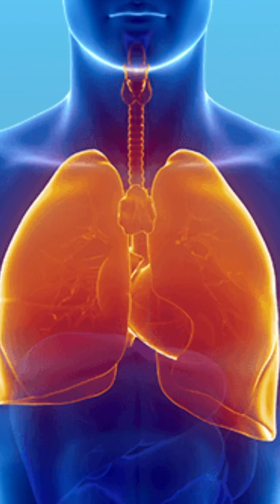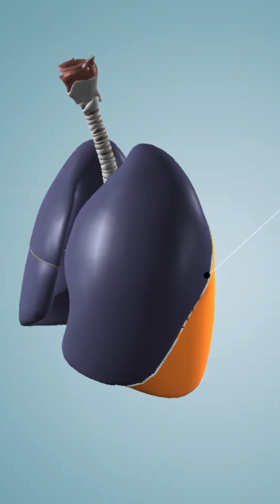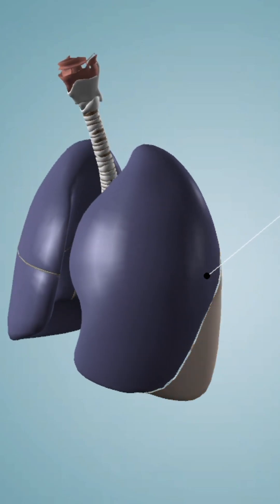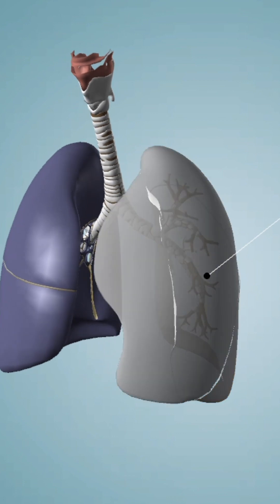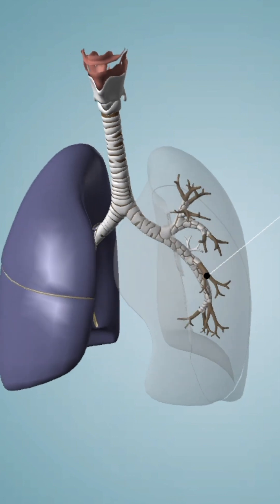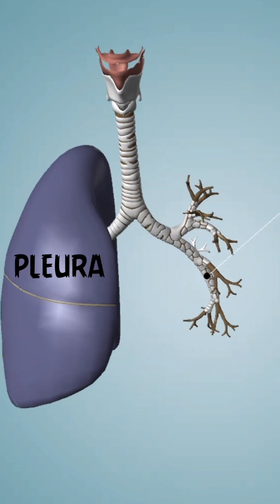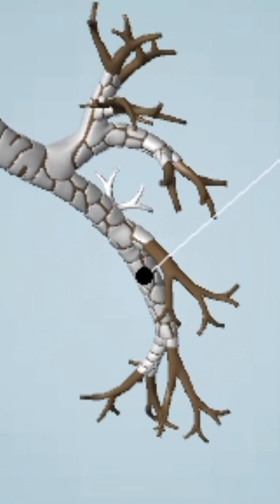When we think of lungs, we think of this. But these are not lungs. This is pleura, a bag which protects real lungs from the outside world. If we remove it, we get to see the real deal.